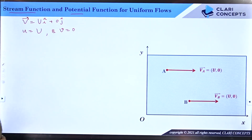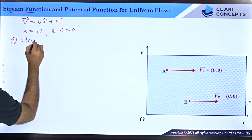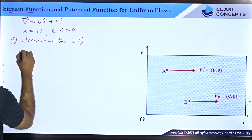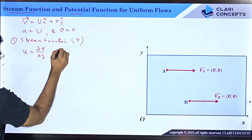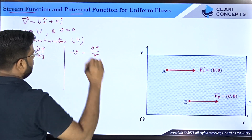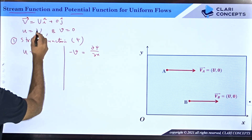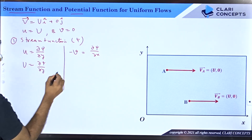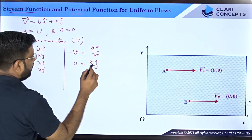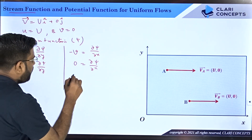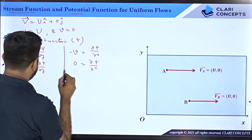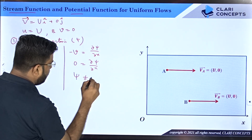Now we need to find the stream function and potential function. For the stream function psi, we know that differentiating psi with respect to y gives u, and differentiating psi with respect to x gives negative v. Since u equals capital U, we have U = ∂ψ/∂y. Since v equals zero, we have ∂ψ/∂x = 0, which means psi is not a function of x.